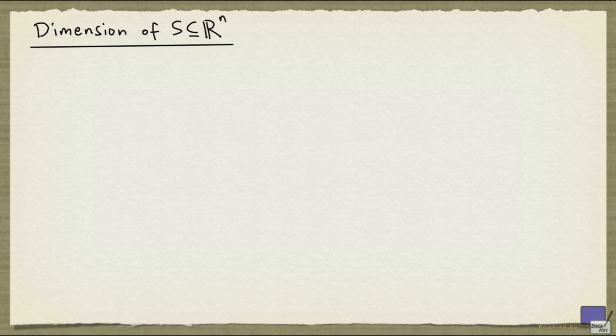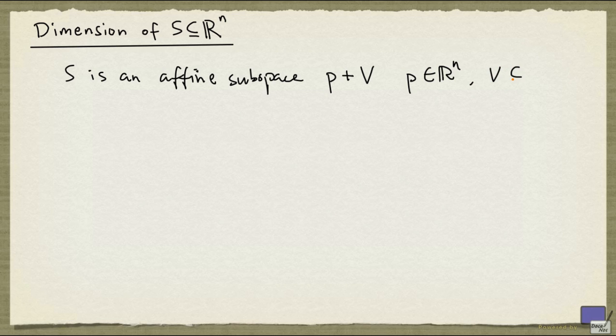Let's first take a look at affine subspaces. Suppose that S is an affine subspace. Recall that it is given by p plus V for some p in R^n and some vector subspace V of R^n.